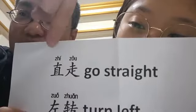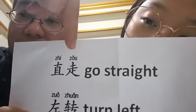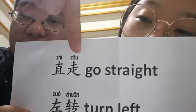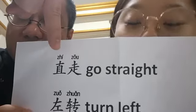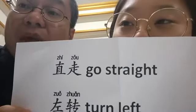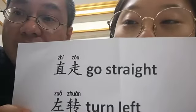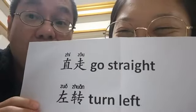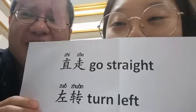直走. Abby, 直走 means? Go straight. That's right — 直走, go straight. So, 直 means straight, and 走 means go or walk. So, straight walk means go straight.